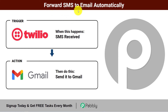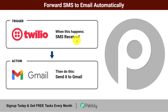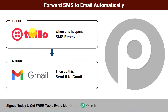In this video we will learn how to forward SMS to email automatically. Imagine that you are receiving lots of important SMS and customer queries on a specific phone number provided by Twilio. Whenever a new SMS is received, you want to send the same SMS to Gmail so that the person handling the queries does not have to check the phone for every incoming SMS. They can access the queries via Gmail only. Anyone can set these kinds of automations for their business — just follow this video till the end.